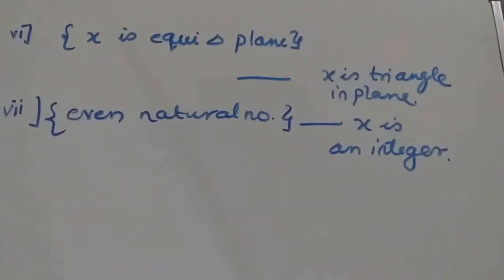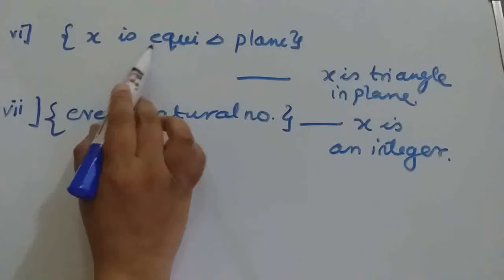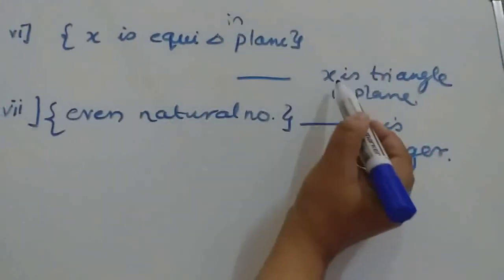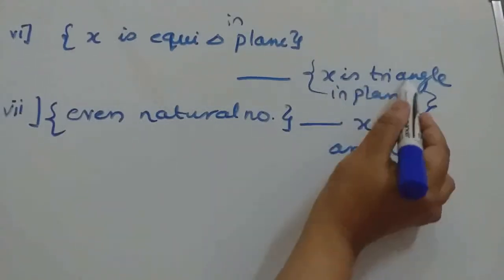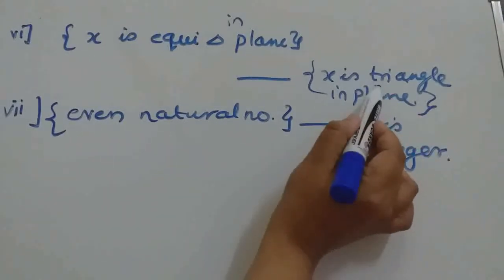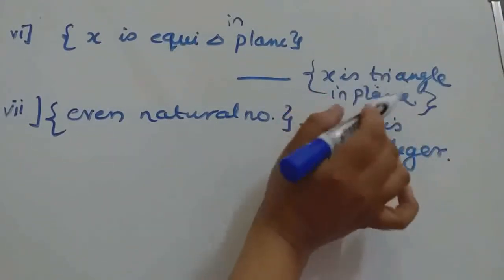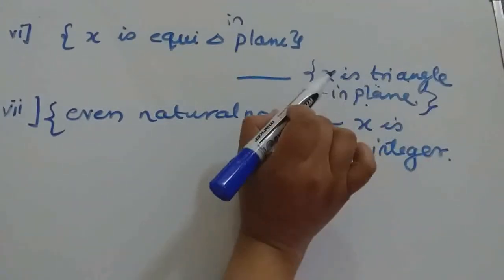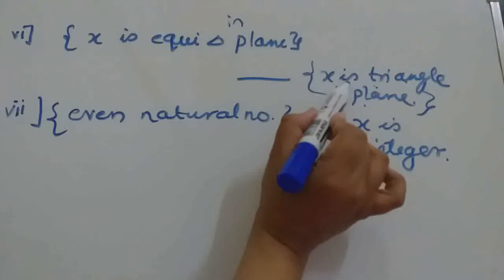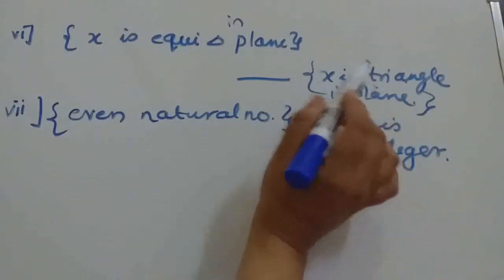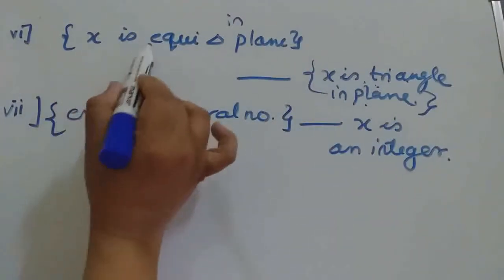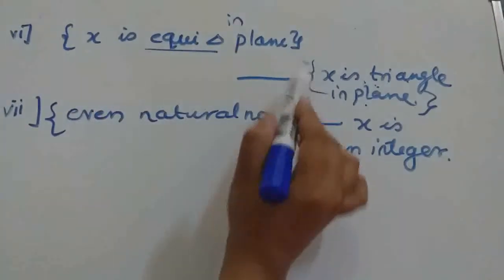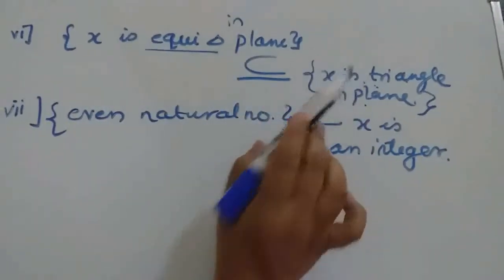Now question 6: X is an equilateral triangle in a plane, and in this set, X is a triangle in a plane. This is the set in which all types of triangles will come—whether equilateral, scalene, or isosceles. So this will be a bigger set, whereas in this set, only equilateral triangles. So definitely this set will be a subset of this particular set.